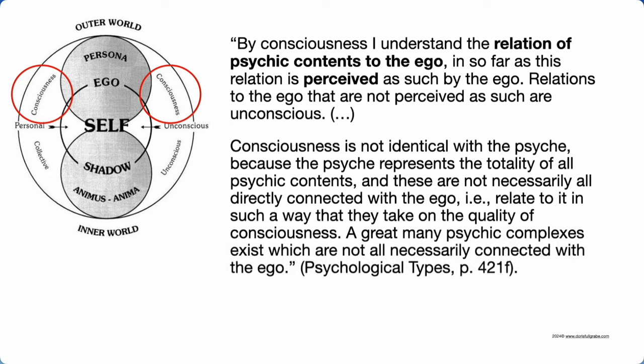A great many psychic complexes exist which are not all necessarily connected with the ego. So the ego is our reference point for who we are, and consciousness is our ego's awareness and interpretation of what happens around us. Consciousness is you awake, aware and alert. Your ego actually predisposes you to pay attention to some things more than others, which creates certain conscious experiences more than others. Sometimes your unconscious takes over — when you're asleep, doing something on autopilot, or when you're in the grip of a complex.